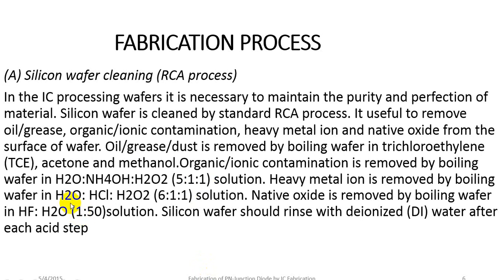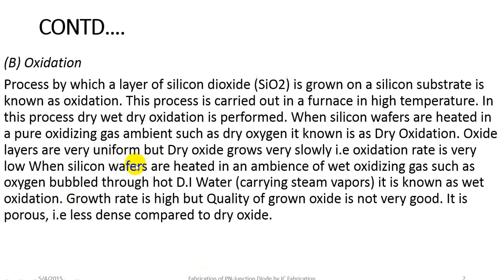The second process is oxidation — the process by which a layer of silicon dioxide is grown on a silicon substrate. This process is carried out in a furnace at high temperature. In dry oxidation, silicon wafers are heated in a pure oxidizing gas ambient such as dry oxygen. Oxide layers grown this way are very uniform, but dry oxide grows very slowly, meaning the oxidation rate is very low.